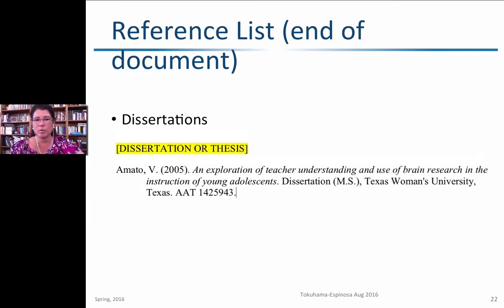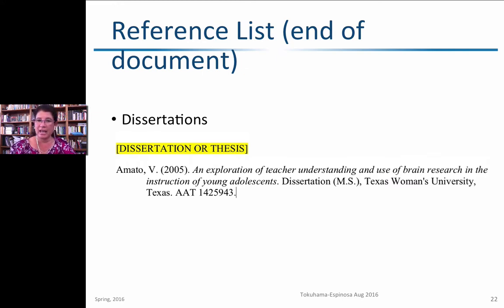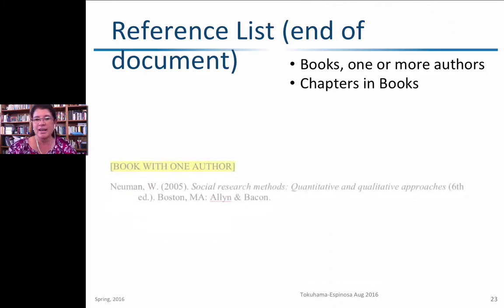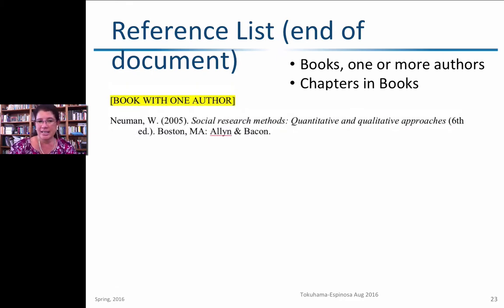For a dissertation citation, you list the author's last name followed by the first initial — not the full name. That's followed by the year of publication, a period, and then the title of the document. You also indicate it's a dissertation and the university it came from. In the United States, dissertations also have an AAT number listed at the very end. For books, the pattern is similar: last name, first initial, year, title, followed by city, state abbreviation, colon, and the publisher.